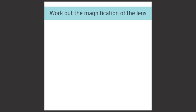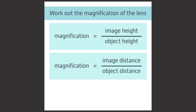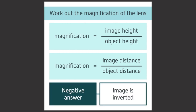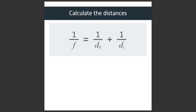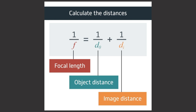You can work out the magnification of the lens using these equations: magnification equals image height divided by object height, or magnification equals image distance divided by object distance. A minus sign in the answer means the image is inverted. You can calculate distances using the equation 1/F = 1/D₀ + 1/Dᵢ, where F is the focal length, D₀ is the object distance, and Dᵢ is the image distance.